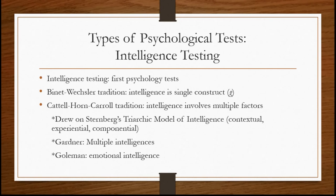I wanted to talk about some of the different types of psychological tests. One we've already mentioned is intelligence testing, which seems to have been the first type of psychological test. There are a couple of different traditions within psychology. The Binet-Wechsler tradition, based on the work of Alfred Binet and David Wechsler, is based on the idea going back to Spearman that intelligence is a single construct called G. That idea has fallen out of favor, and nowadays even the Wechsler tests look at intelligence as involving multiple factors and dimensions.